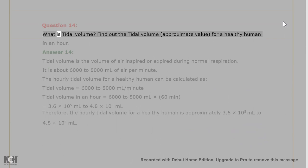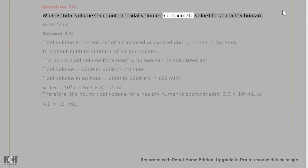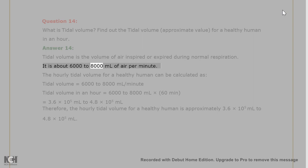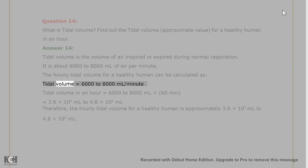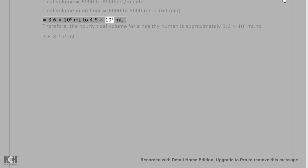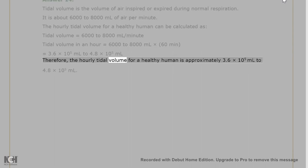Question 14: What is tidal volume? Find the approximate tidal volume for a healthy human in an hour. Answer 14: Tidal volume is the volume of air inspired or expired during normal respiration. It is about 6000–8000 ml of air per minute. The hourly tidal volume = 6000–8000 ml/min × 60 minutes = 3.6 × 10⁵ ml to 4.8 × 10⁵ ml. Therefore, the hourly tidal volume for a healthy human is approximately 3.6 × 10⁵ ml to 4.8 × 10⁵ ml.